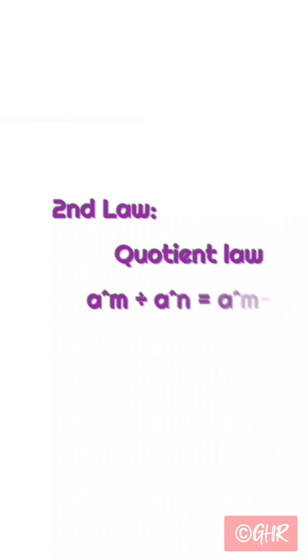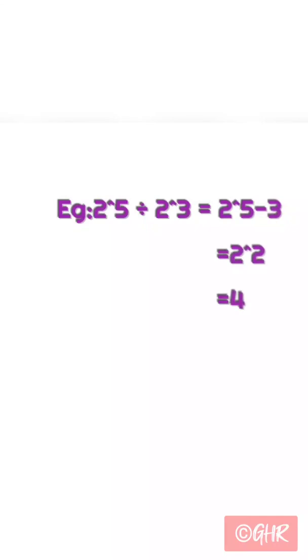Second law: quotient law. a to the power of m divided by a to the power of n is equal to a to the power of m minus n. Example: 2 to the power of 5 divided by 2 to the power of 3 is equal to 2 to the power of 5 minus 3, which equals 2 squared, which equals 4.